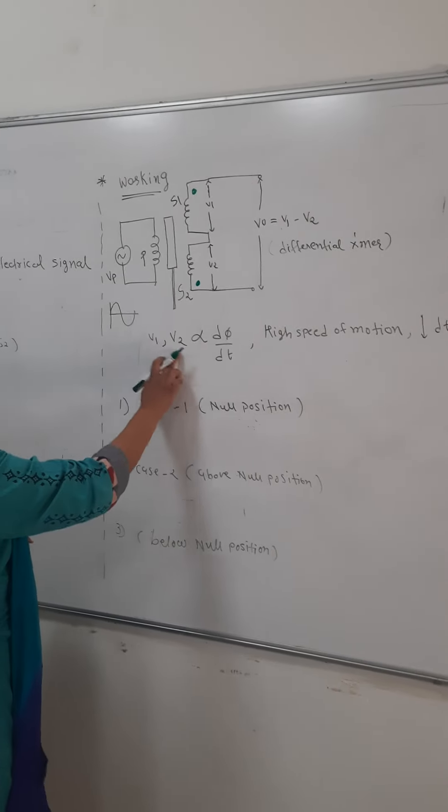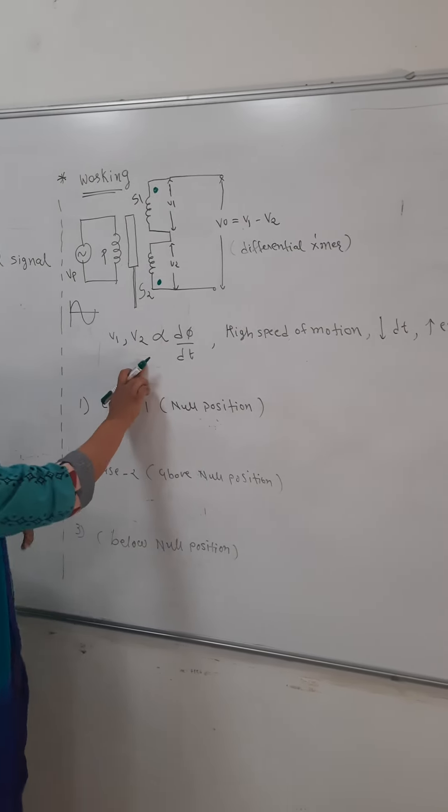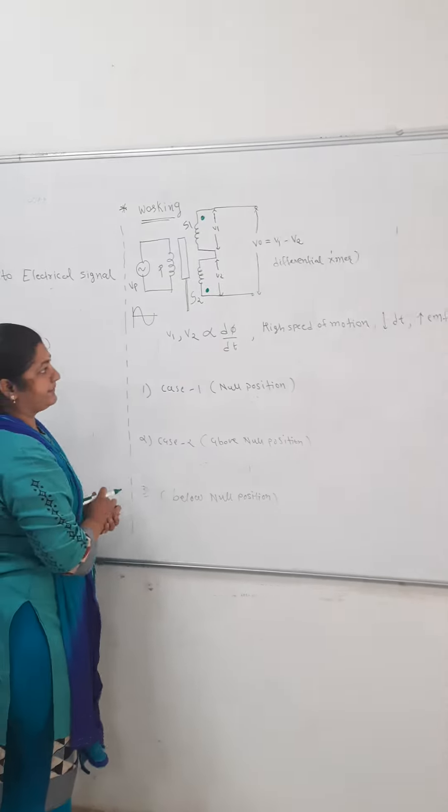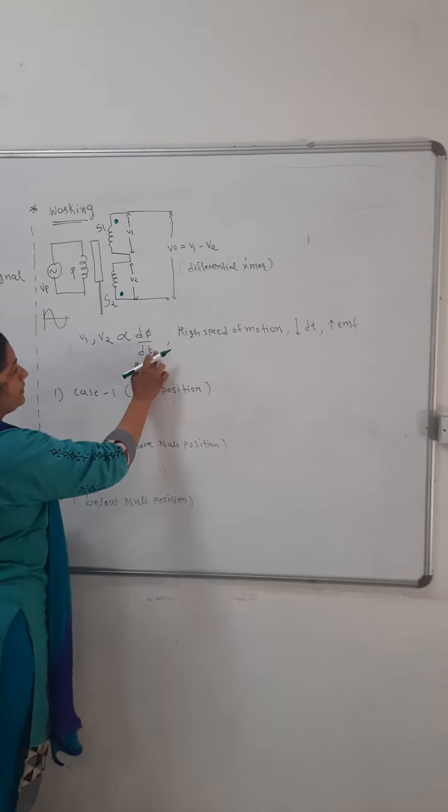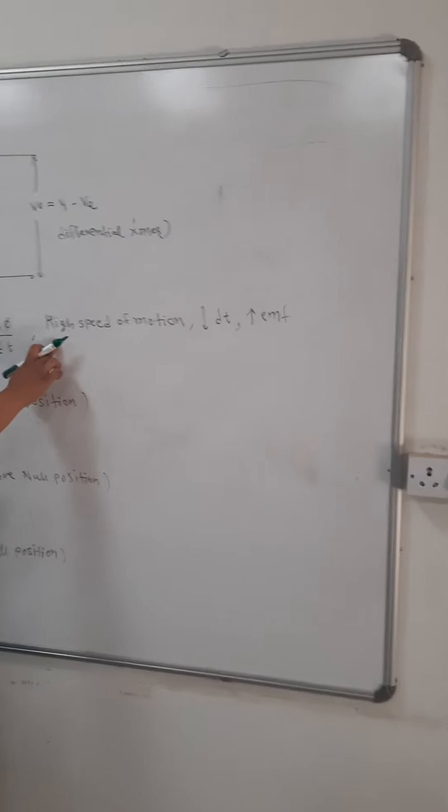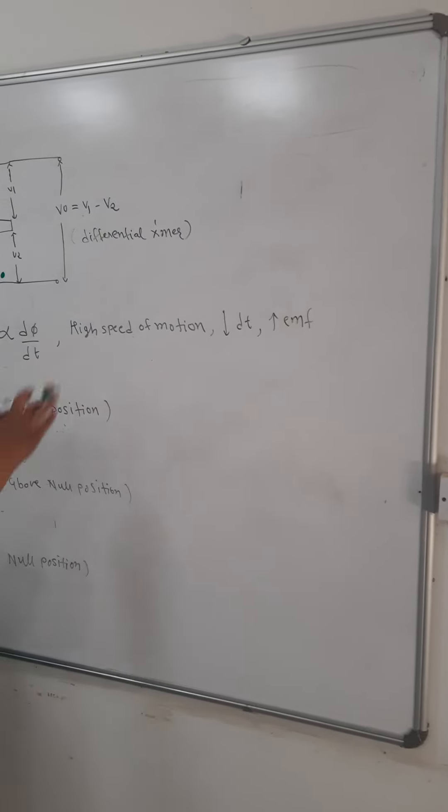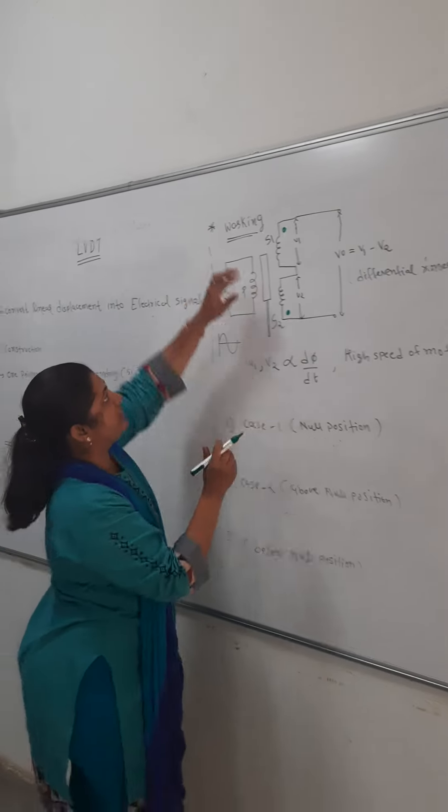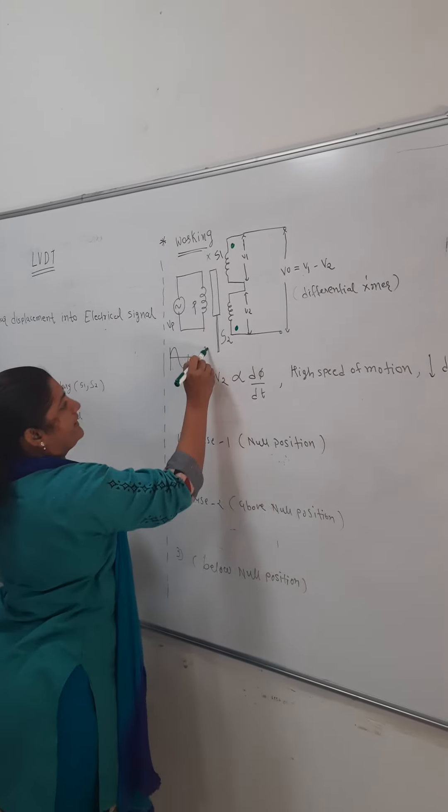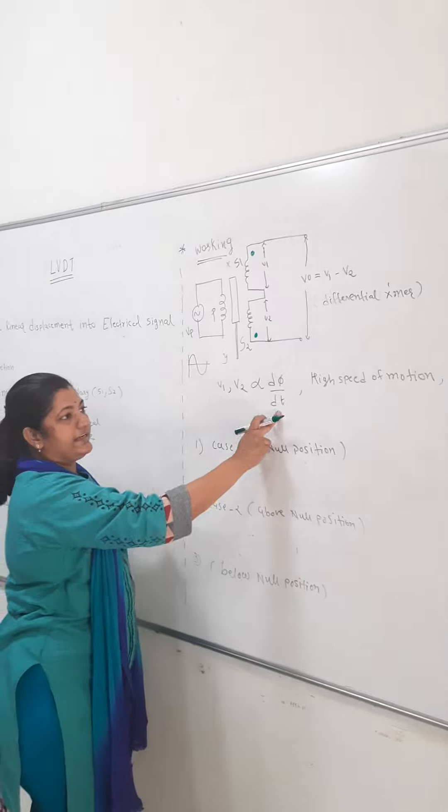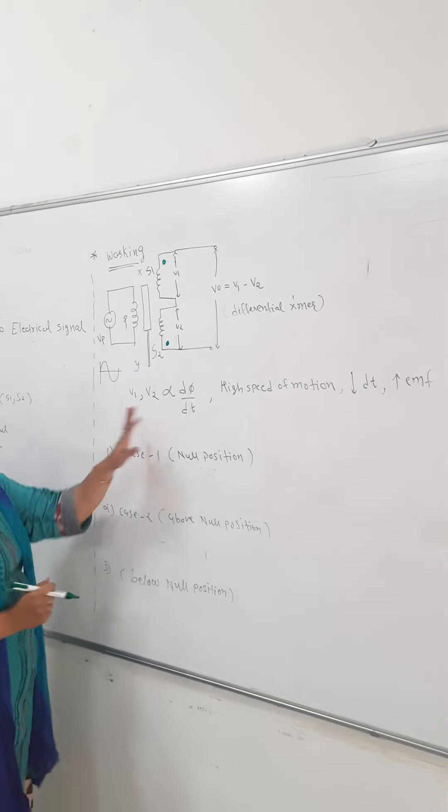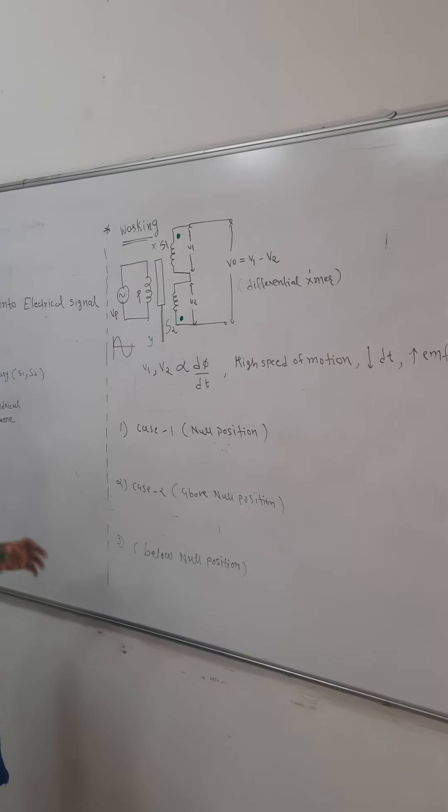Now, V1 and V2, both voltages will of course as per Faraday's law follow the dφ/dt relation. Now, here dt means what? If we have, let's say, high speed of motion, that means we can say that change of time dt to reach from X to Y will be very less. Or we can say that dt will be very less. And that's why EMF induced will be high. So this is one of the fundamentals for V1 and V2 production.